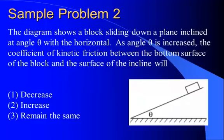How about this one? A diagram shows a block sliding down a plane inclined at angle theta with the horizontal. As that angle is increased, the coefficient of kinetic friction between the bottom surface of the block and the surface of the incline will either decrease, increase, or remain the same. Well, remember, that coefficient of friction is determined only by the surfaces that are in contact. It doesn't say anything about angle. So because the surfaces in contact aren't changing, it must remain the same.